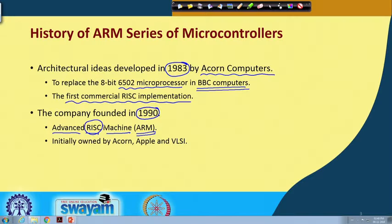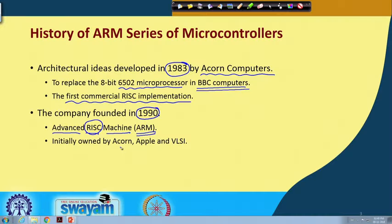A company was finally founded in 1990. The name ARM is the acronym for Advanced RISC Machine — you can see the word RISC is embedded in the name itself. ARM architecture essentially borrows concepts from the RISC architectural concept. Initially, ARM was jointly formed and owned by Acorn, which was the initiator, along with Apple and a company called VLSI. These three companies came together and formed the new company called ARM.